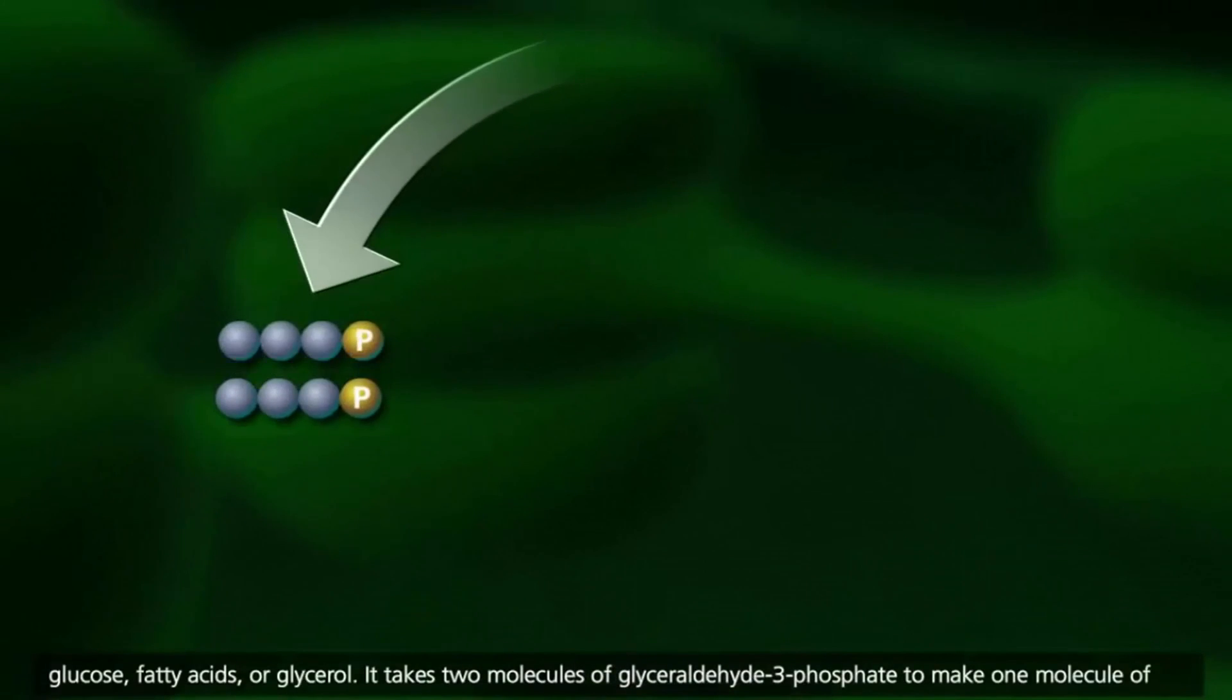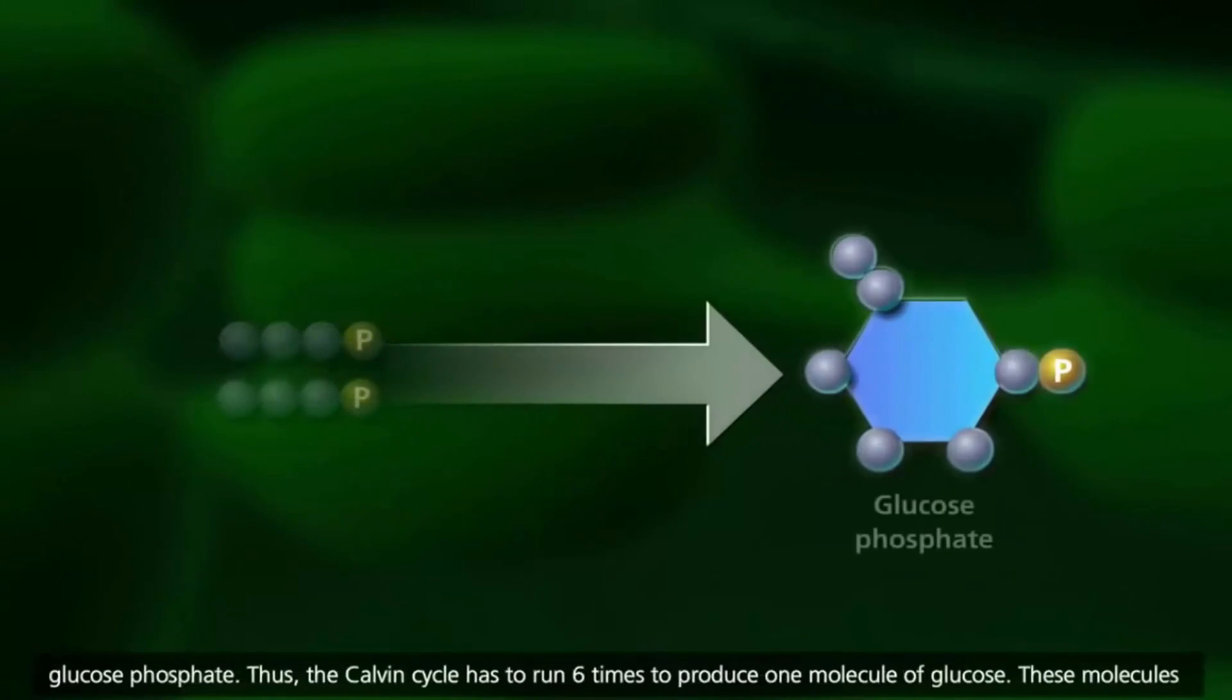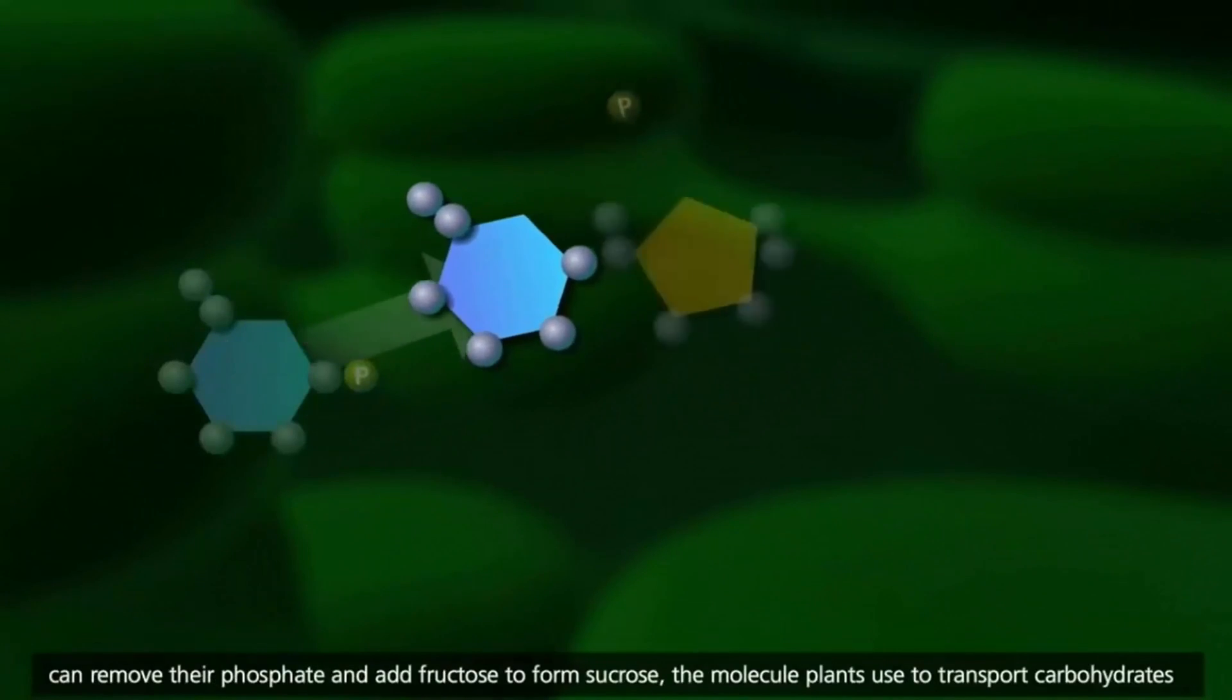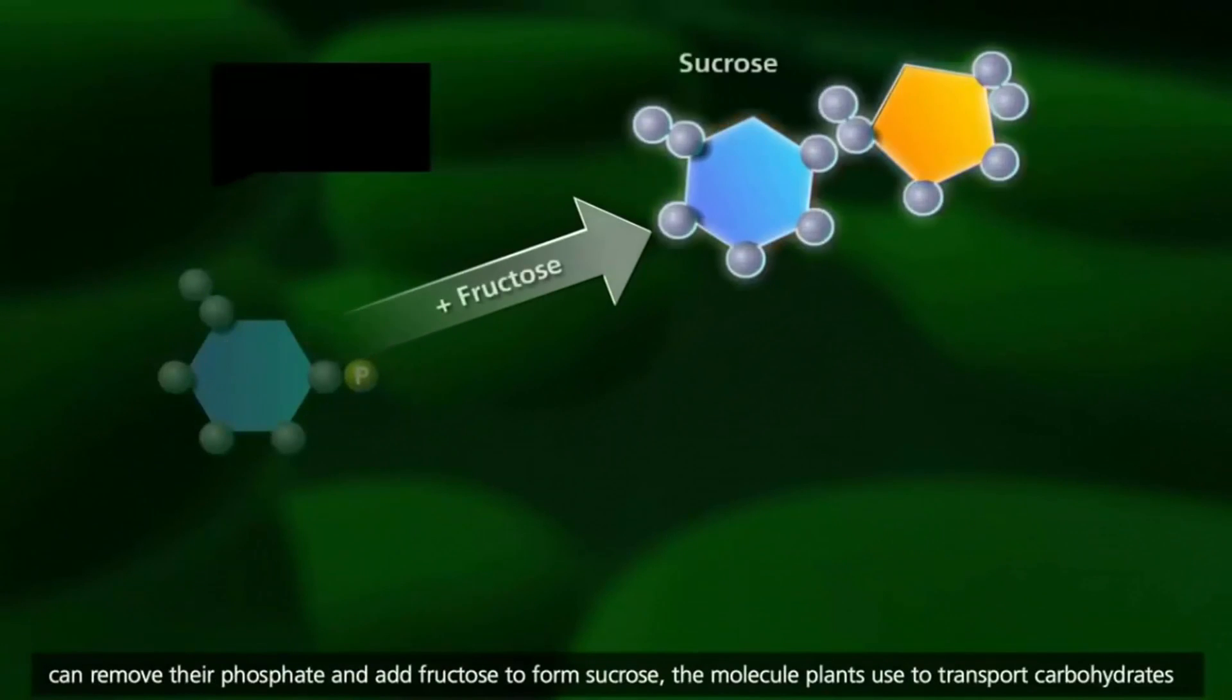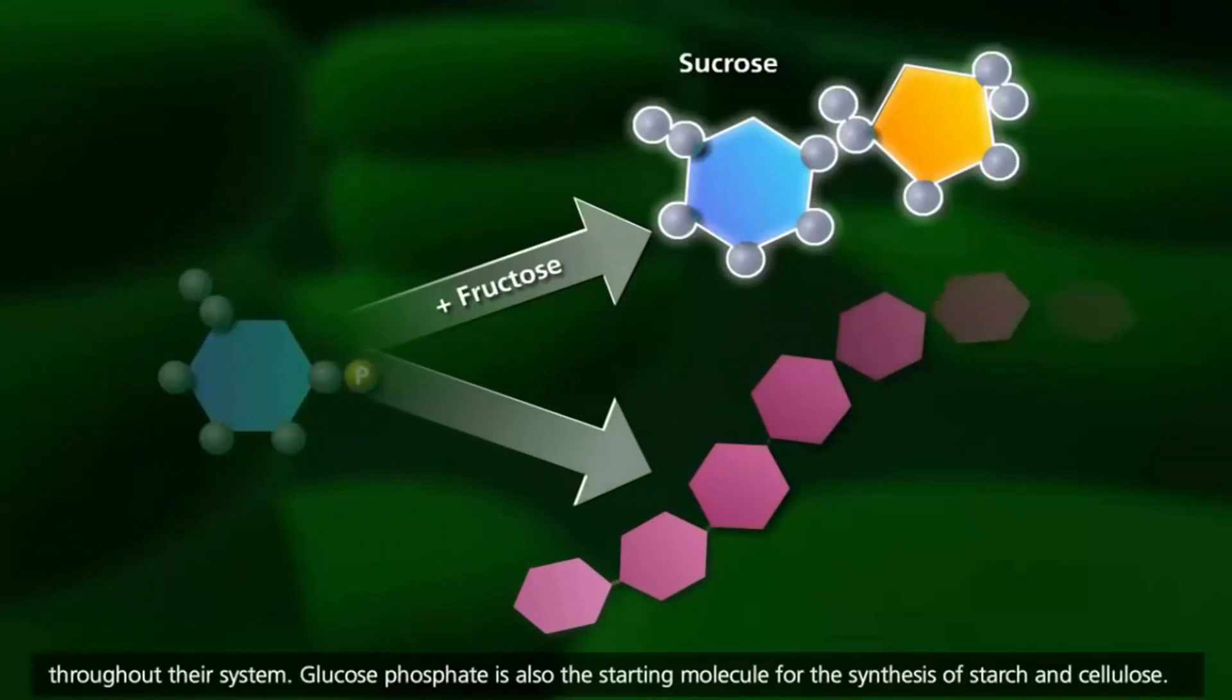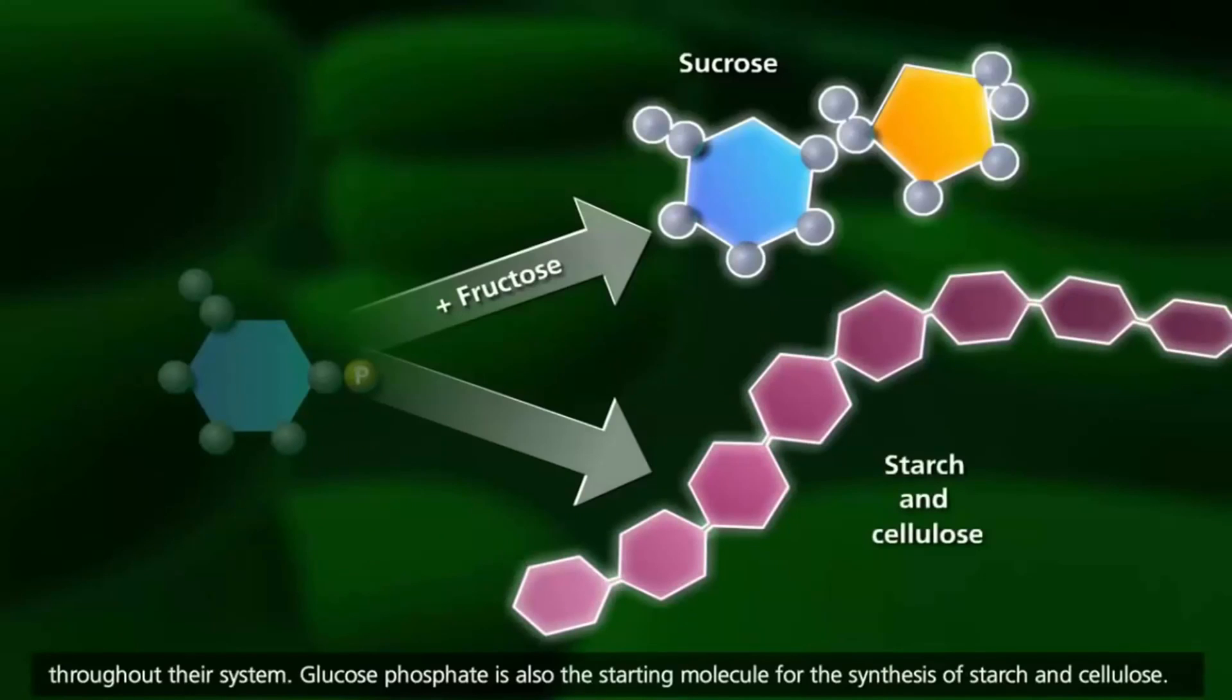It takes two molecules of glyceraldehyde-3-phosphate to make one molecule of glucose-phosphate. Thus, the Calvin cycle has to run six times to produce one molecule of glucose. These molecules can remove their phosphate and add fructose to form sucrose, the molecule plants use to transport carbohydrates throughout their system. Glucose-phosphate is also the starting molecule for the synthesis of starch and cellulose.